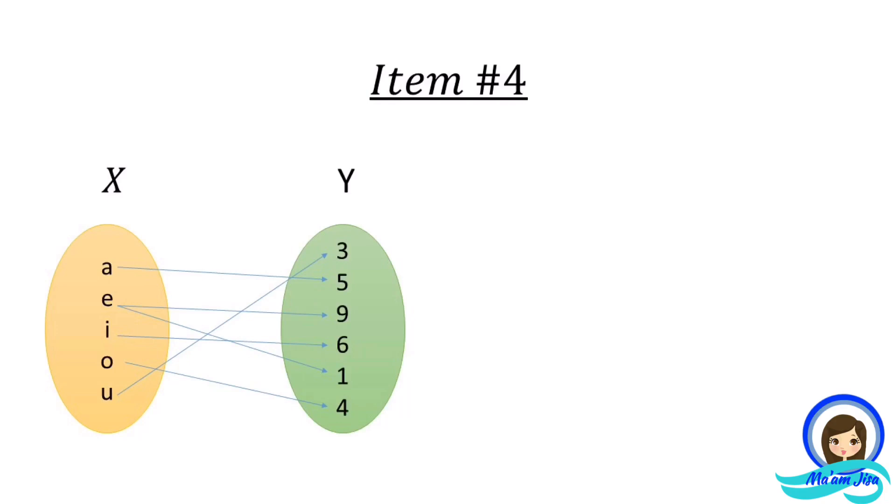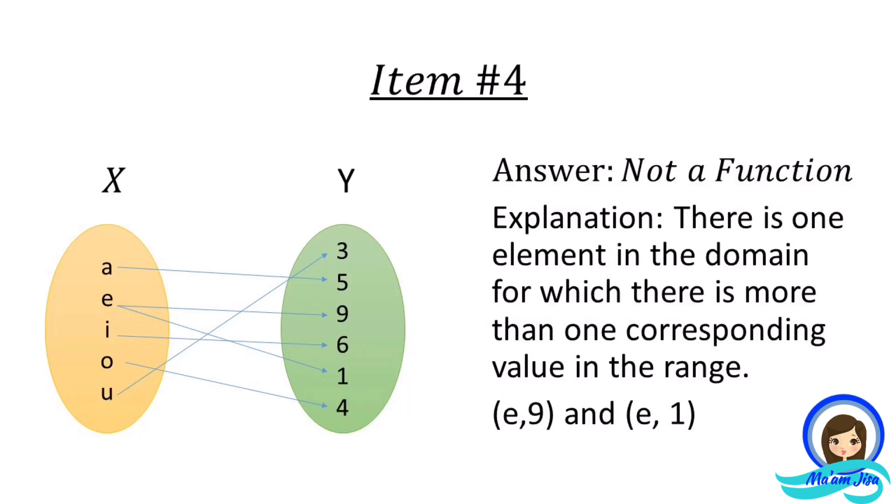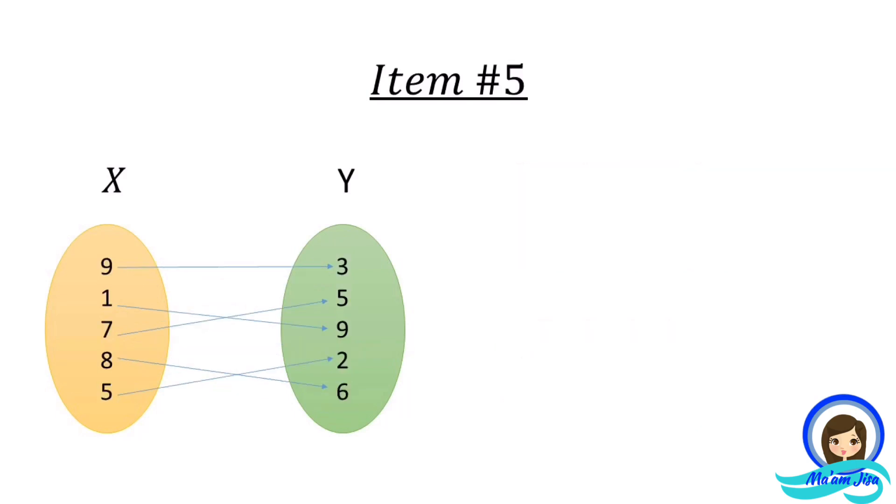Item number four. Answer: not a function. There is one element in the domain for which there is more than one corresponding value in the range. These are the ordered pairs E9 and E1. Item number five.